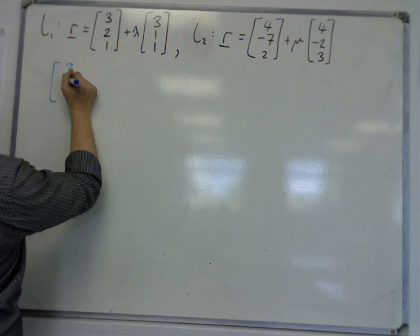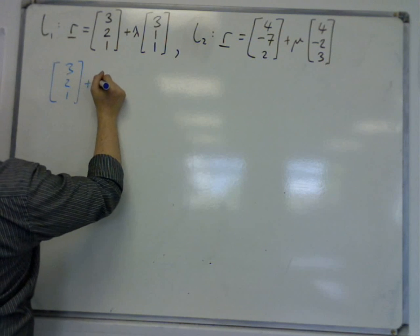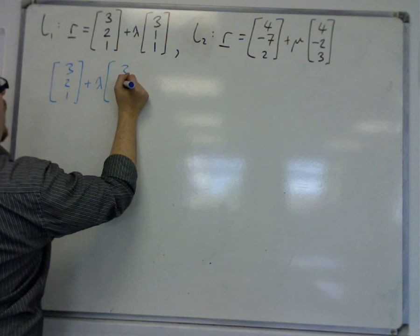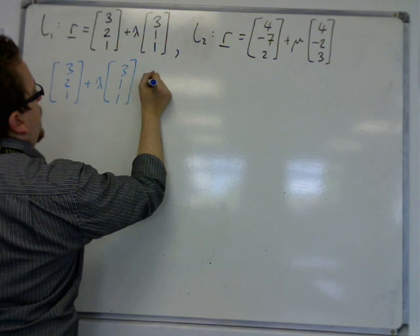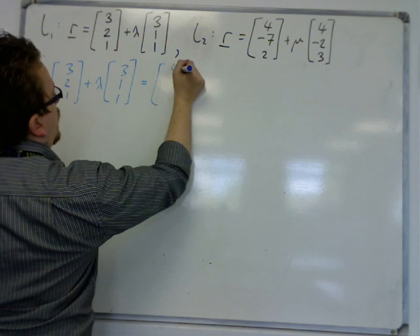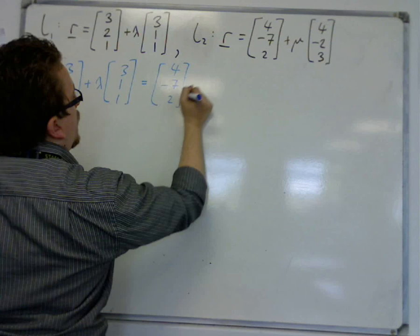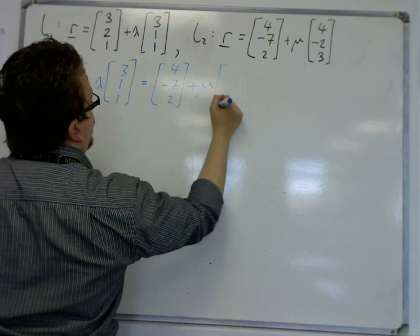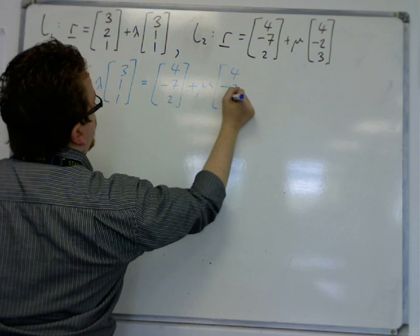So we have (3, 2, 1) plus lambda (3, 1, 1) is equal to (4, -7, 2) plus mu lots of (4, -2, 3).